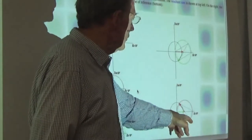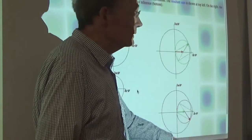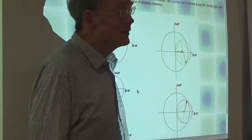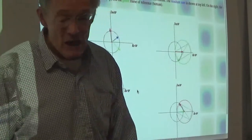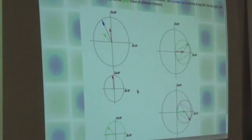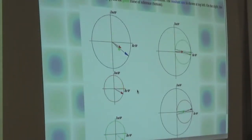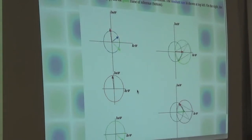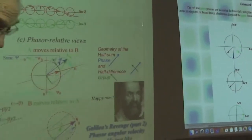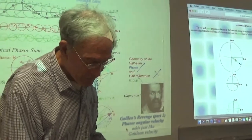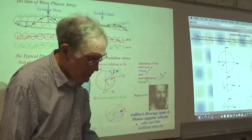Here's going the other way: make the green one stand still and the other one goes backwards. Does the same thing. How you look at a phasor depends on what frame you're in. But they all add Galilean style - and we're going to make big use of that.